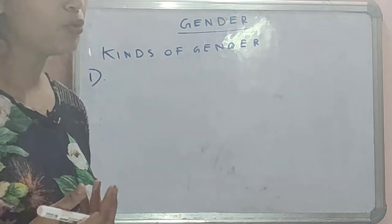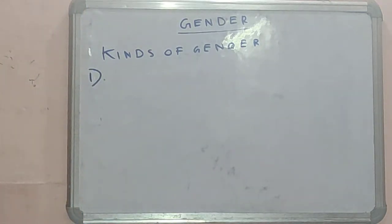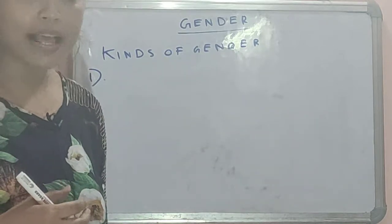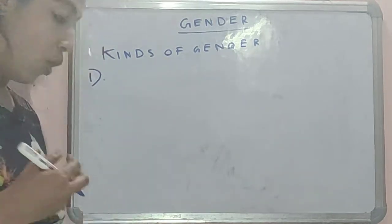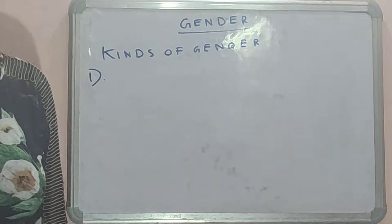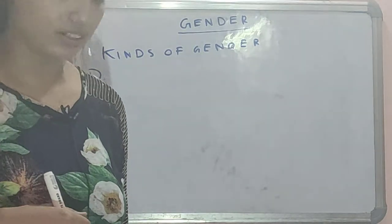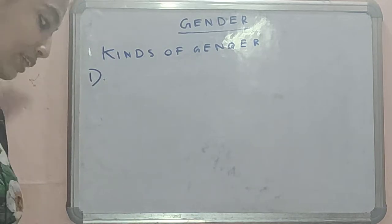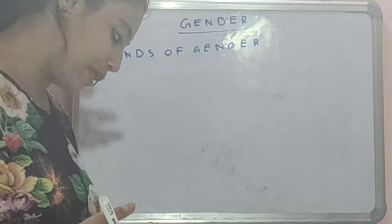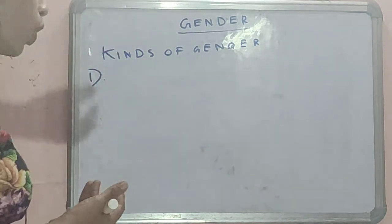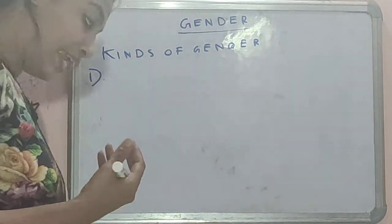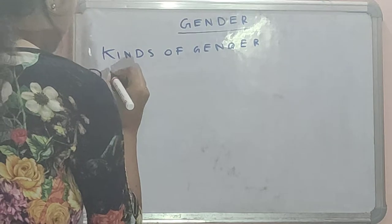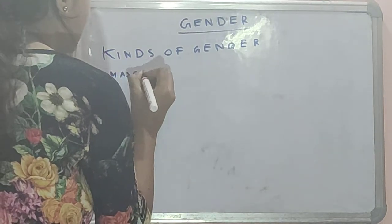So to start with masculine gender, it's very easy to understand from the word masculine, and I think almost everyone knows what masculine gender is. A noun which denotes a male person or animal is called masculine gender. For example: boy, brother, father, husband, horse, dog, king, him — these are examples of masculine gender.